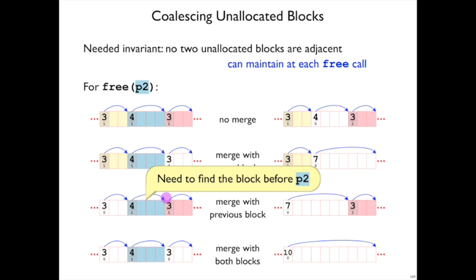Our options are either to start at the beginning of the list every time. We've already seen that that's a performance issue already with allocation. Now we're making it a performance issue for free, so that would be bad.